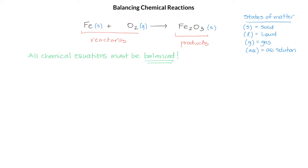All chemical equations must be balanced, which means that we must have equal numbers of atoms of each element on the reactant side and the product side.